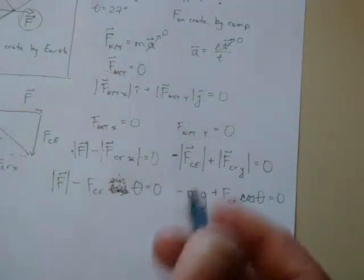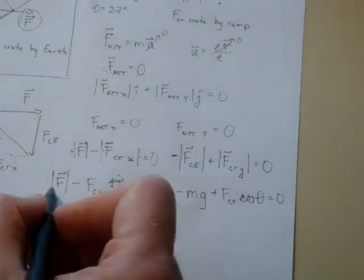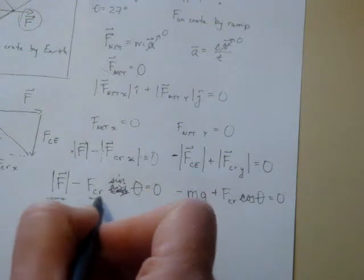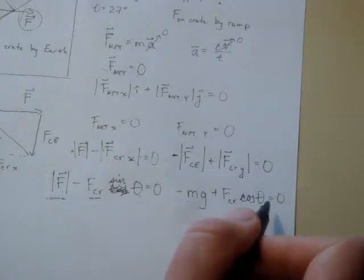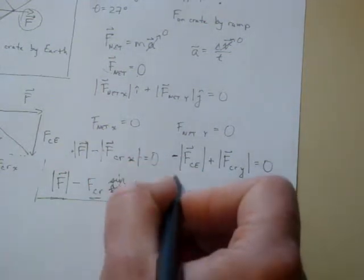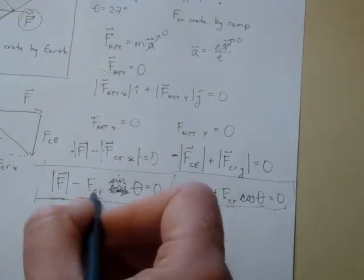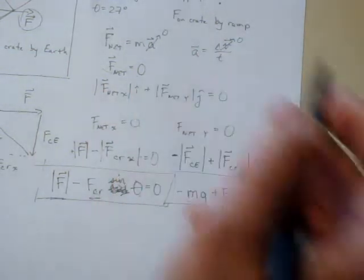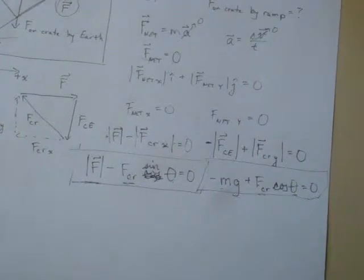Now the question is asking us for two quantities. We know theta, we know mass, we know gravity — but we don't know F and we don't know FcR. What we have here is two equations and two unknown quantities: FcR and F. It turns out the question itself is asking for those same two quantities, so we solve the system.